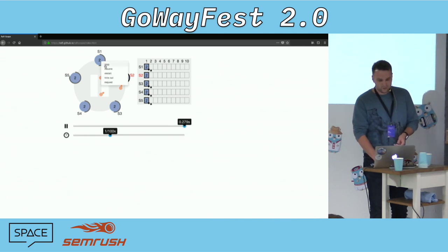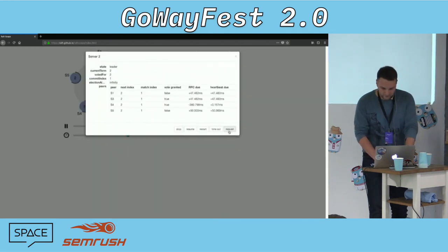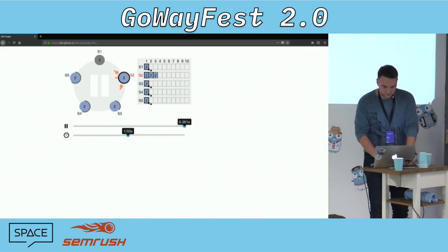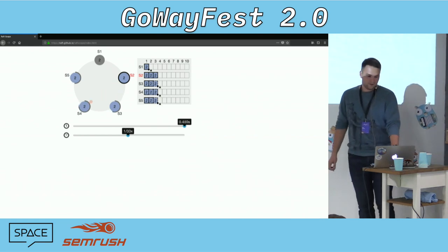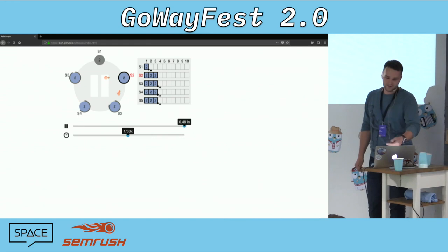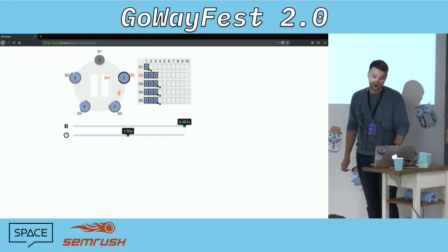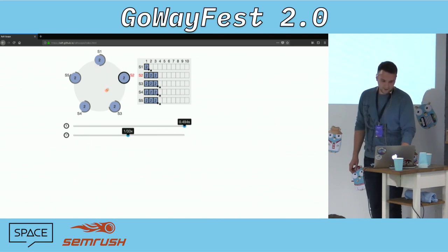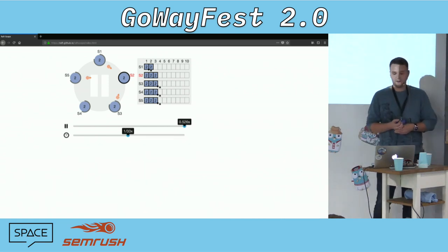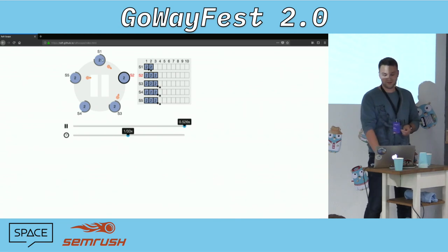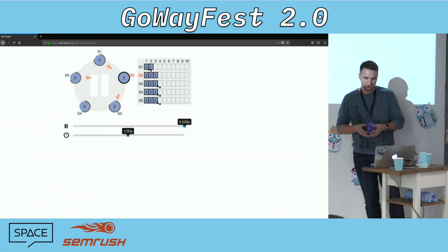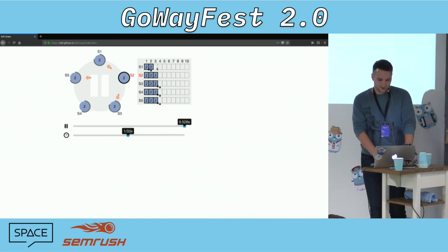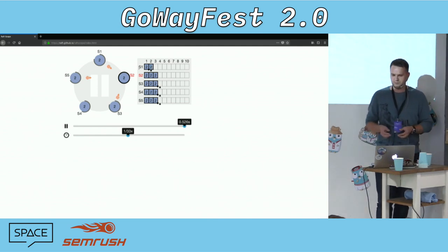We can also stop one server and look how it works. Let's send a few requests to the leader. As you can see, all nodes have the new log entries, but server number one doesn't have them. Let's resume. The leader sent an append-entries RPC, and the new log entry on node one is applied, committed, and has been applied eventually.